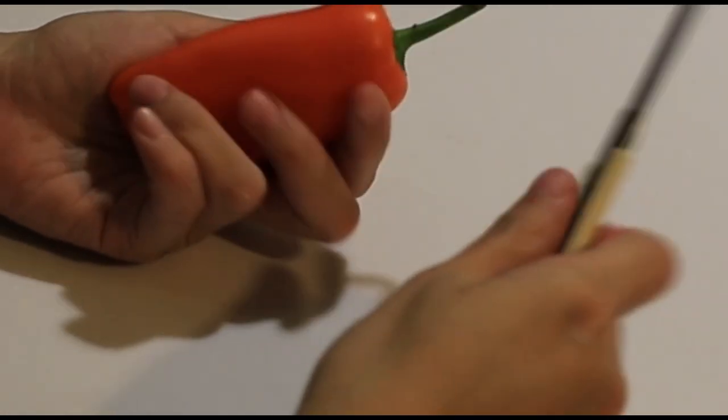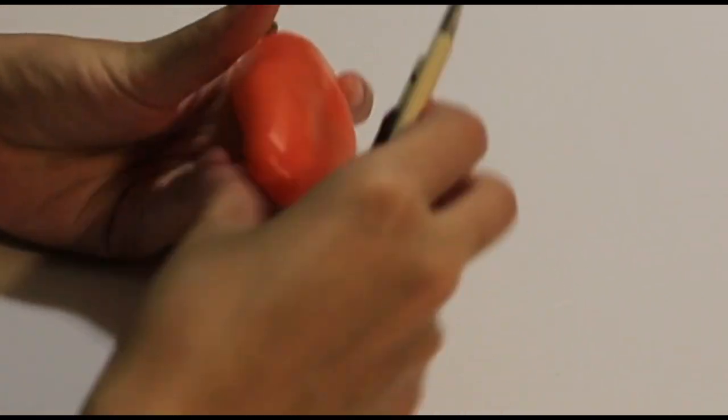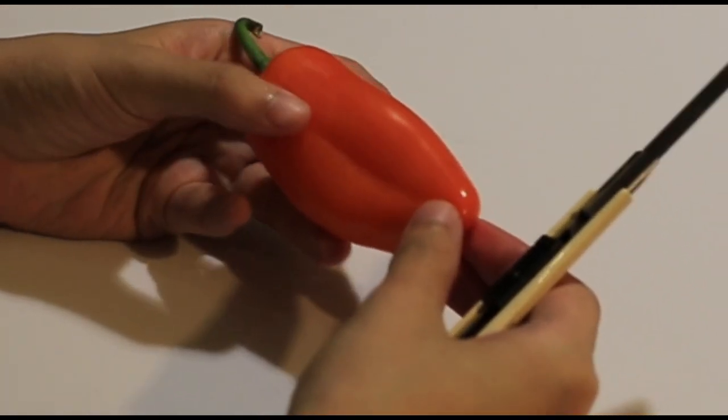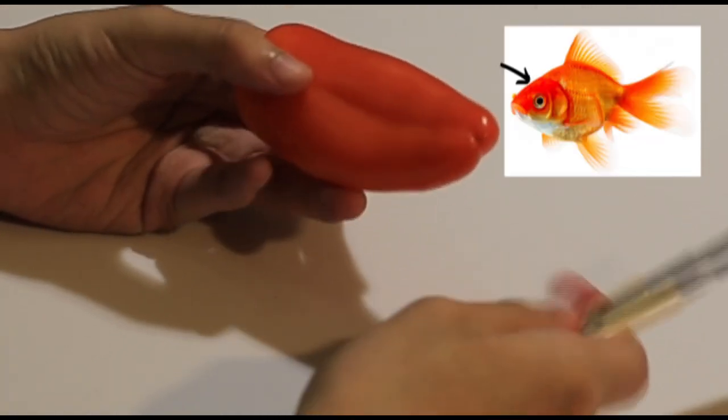Okay, first we are going to observe the natural shape of the capsicum that we have in our hand before we proceed to shape the top of the head of the goldfish.